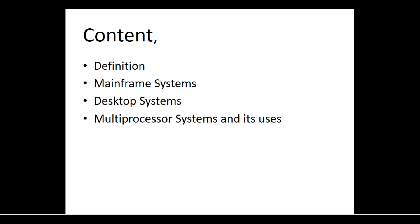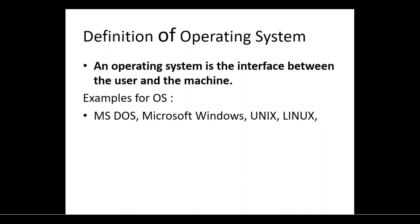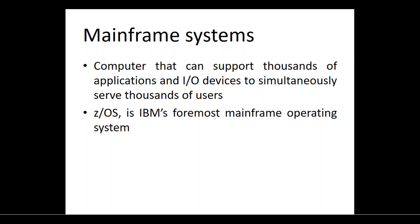Let's briefly revisit the definition of an operating system. An operating system is the interface between the user and the machine. Examples of operating systems include MS-DOS by Microsoft, Windows, Unix, Linux, and Android.